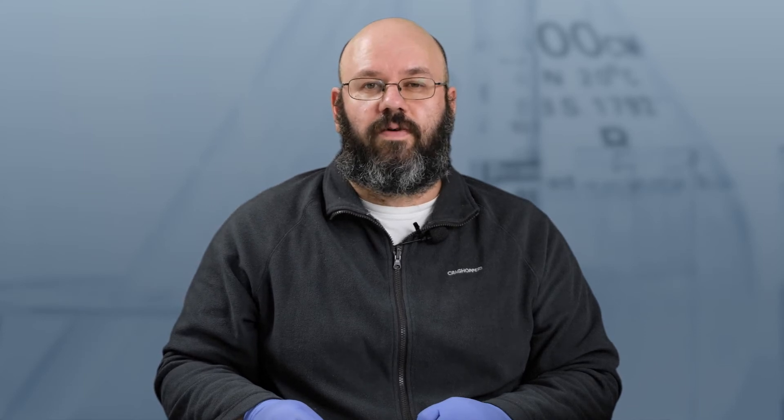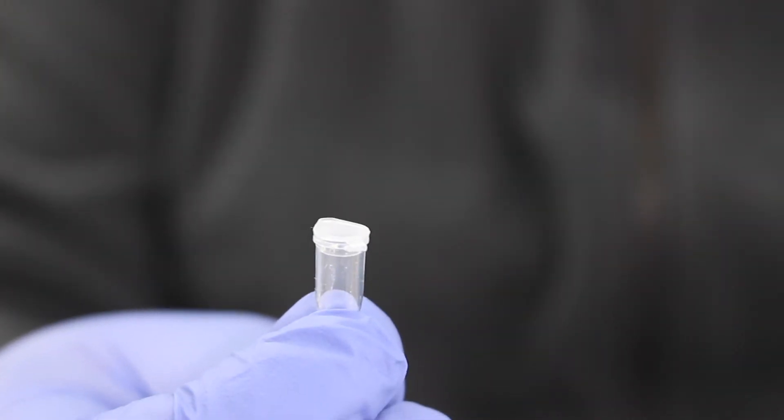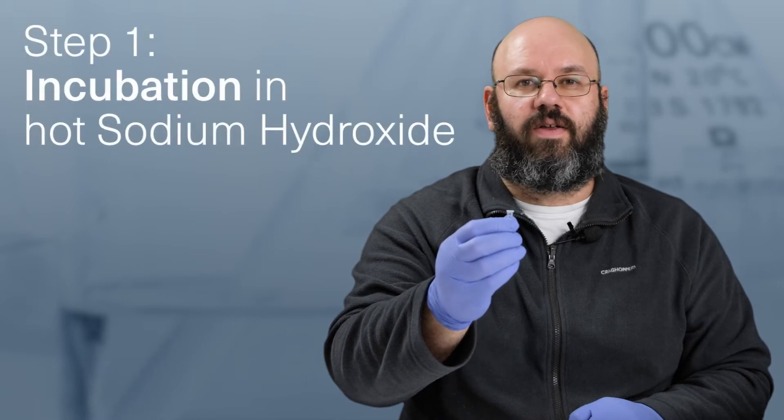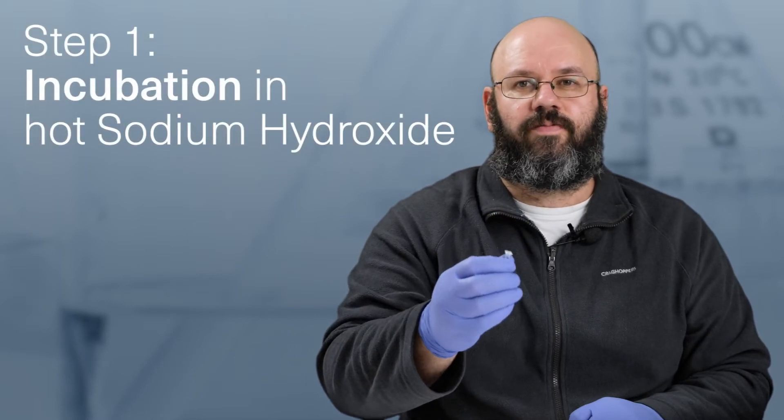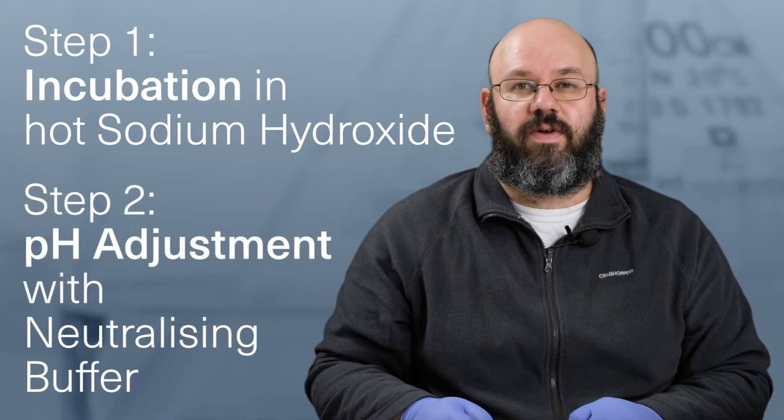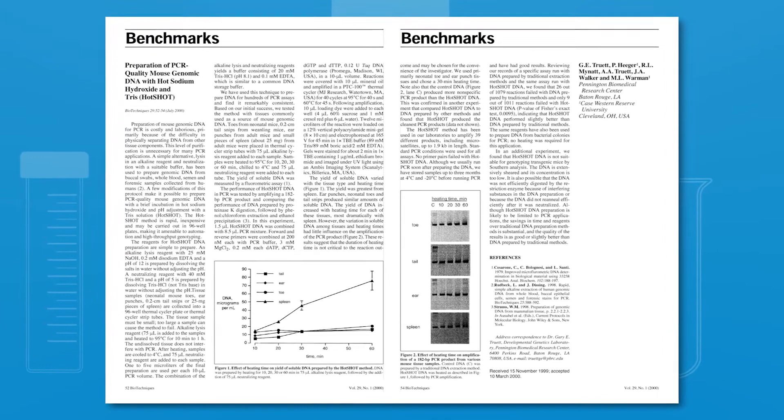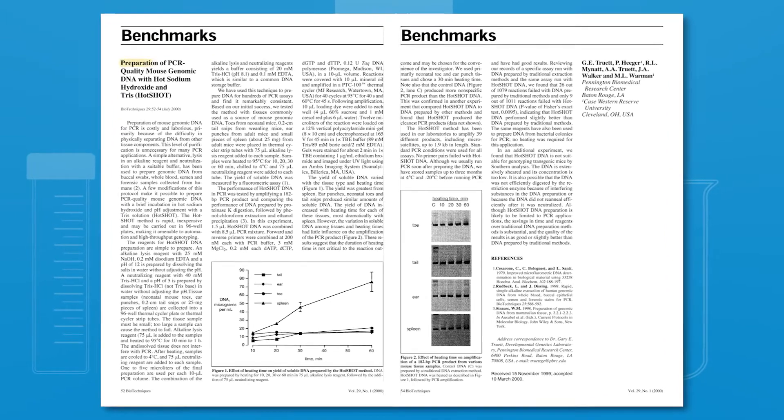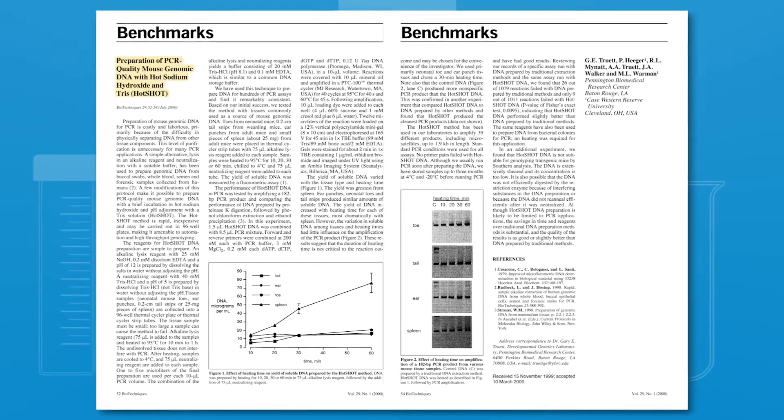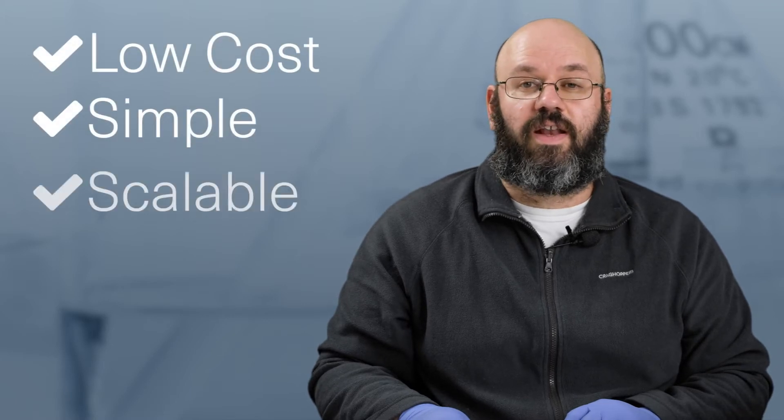The Hotshot method is a simple two-step protocol performed in a single PCR tube. The first step is an incubation step in hot dilute sodium hydroxide, followed by pH adjustment with a neutralizing buffer. The protocol was originally developed in 2000 by Dr. Gary Truitt and his team for routine genotyping of mouse tissues. Today, it's widely used in many different applications because of its low cost, simplicity and scalability.